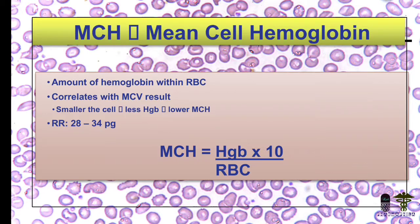Smaller the cell, the lower the MCH. Because MCH is the amount of hemoglobin within the RBC, its reference range is 28 to 34 picograms. Here you can see the formula from which you can calculate the MCH, but don't worry — it is already calculated in the normal CBC.